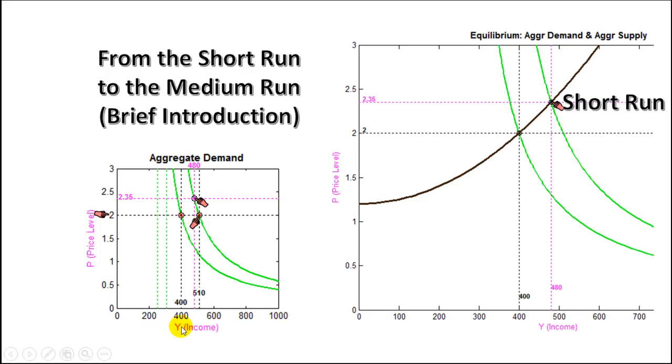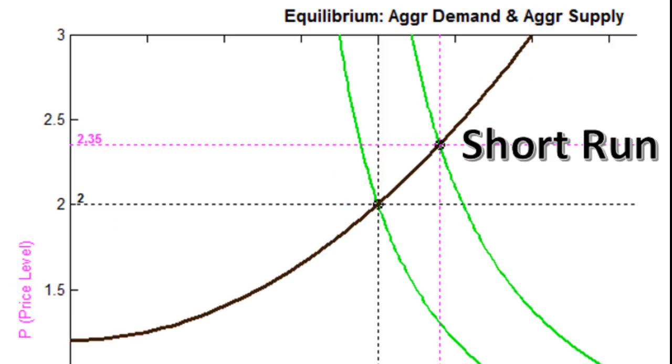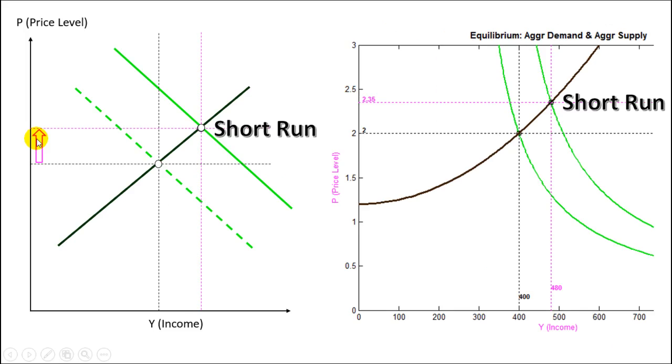So an expansionary policy produces first an impact on income or real GDP and second it produces an impact in prices. So in the short run the economy goes from this point to this point and there is an increase in the price level. In the short run price level increases and the aggregate supply curve will determine the magnitude of this price level increment.